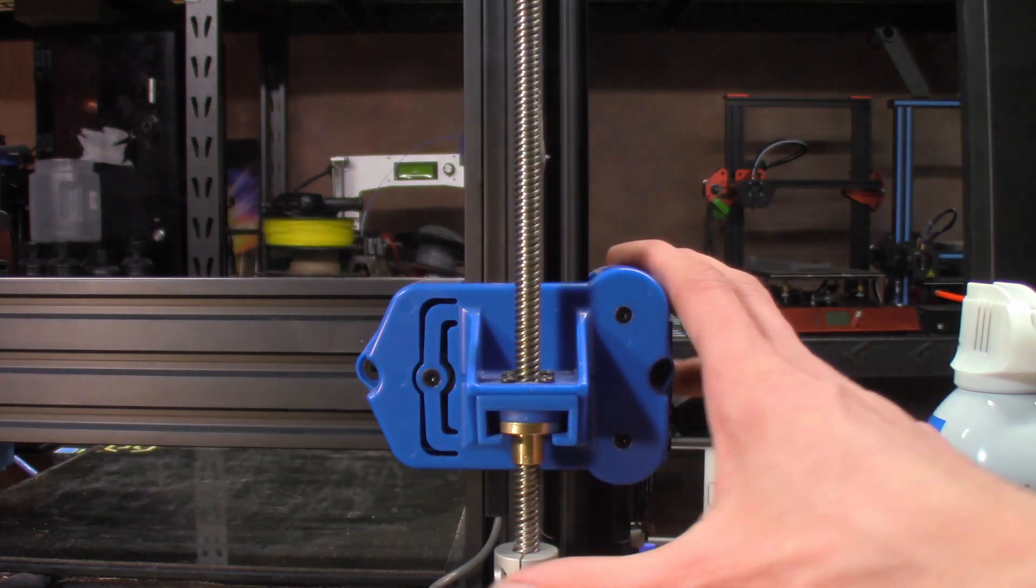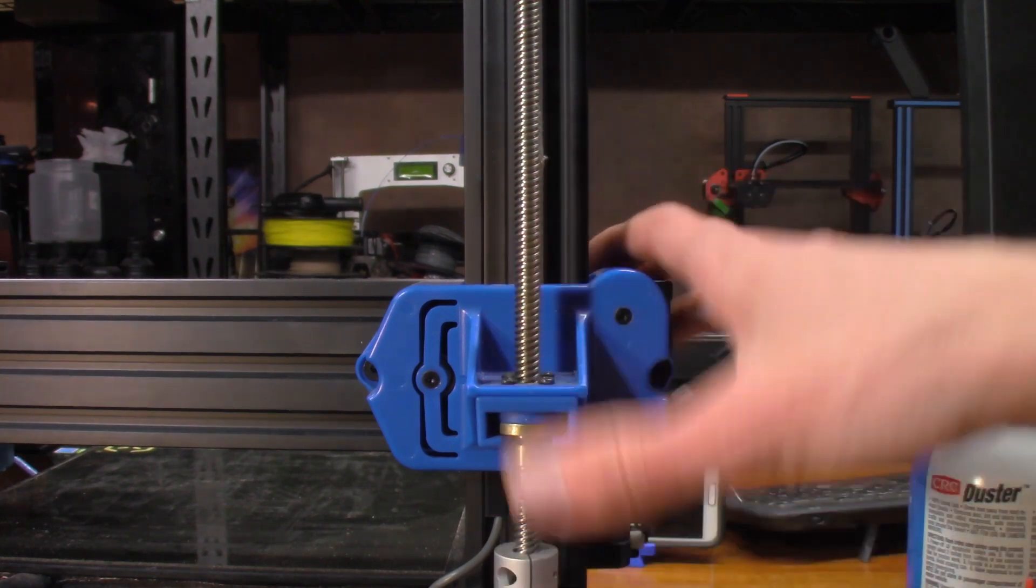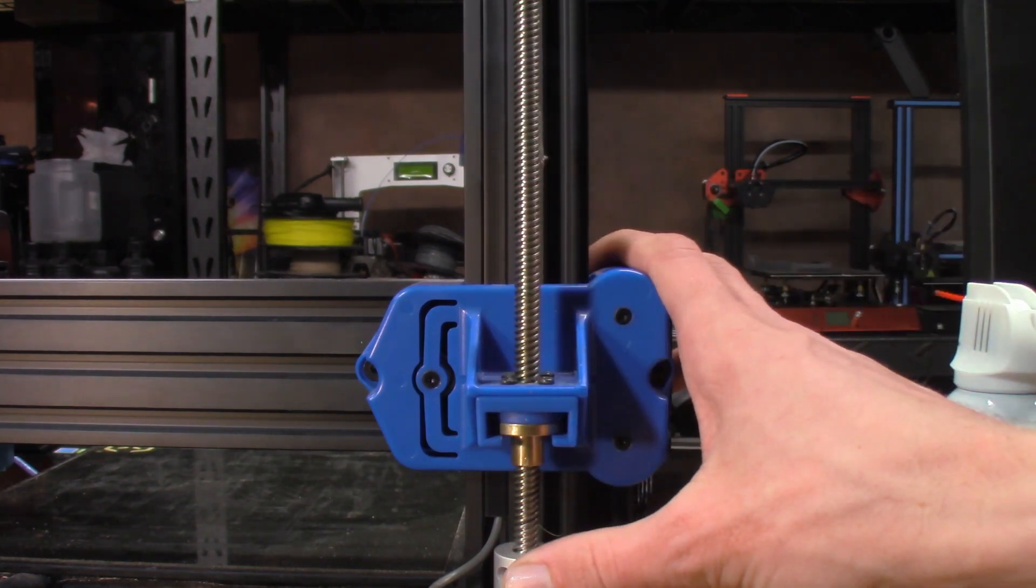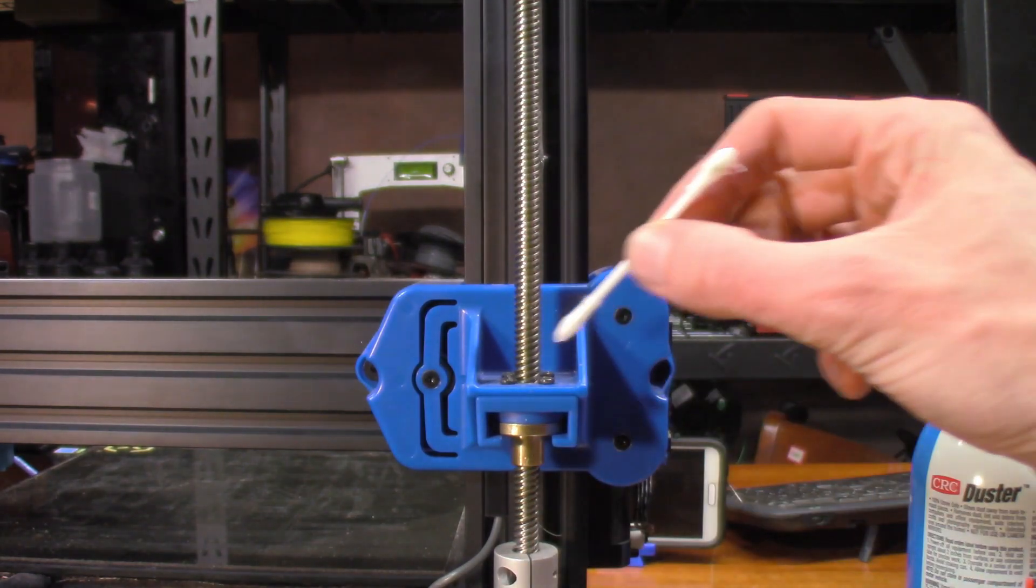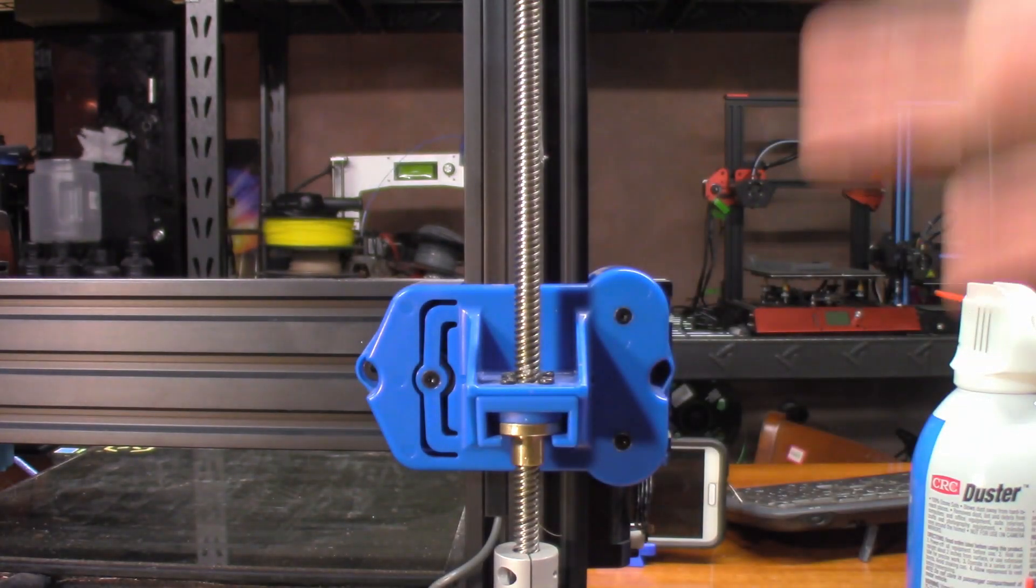As for the intervals of doing it, this printer does not see a ton of use, so I would say every six months I will apply a very tiny amount. If you are using this machine constantly, maybe every one to three months, but just make sure that you're not overdoing it. If you notice a bunch of buildup of grease on this area or this area of the nut, you've overdone it.